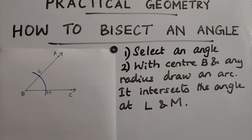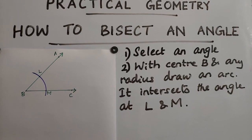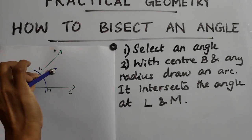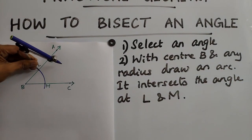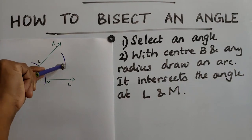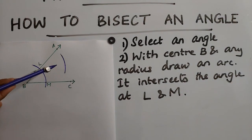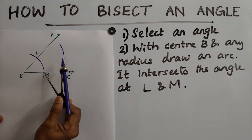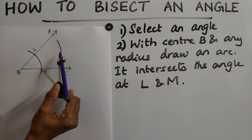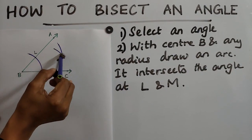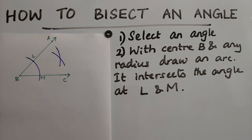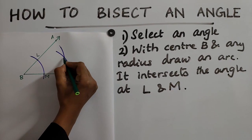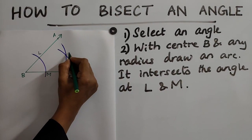Third step: with center L and any measure, draw an arc. If you want to extend the compass, you can. After drawing the first arc, don't change the compass. Then place the metal tip on M and draw one more arc. These two arcs intersect — the meeting point is P.